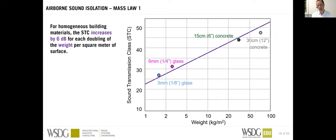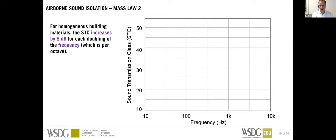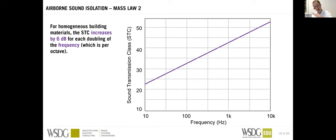There's a second part to the mass law. Also for increasing frequencies — each doubling of frequency, which is one octave — the sound isolation also goes up by 6 dB. So both increasing mass and increasing frequency improve sound isolation.